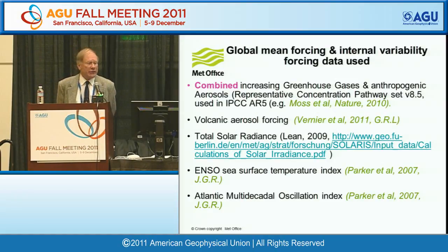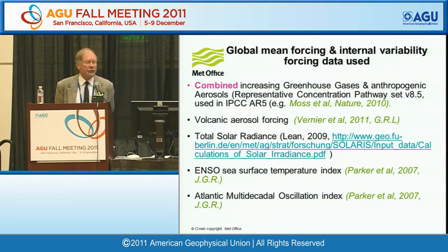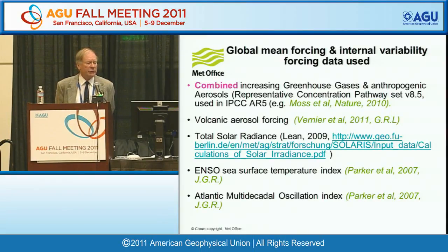What we're using here are the combined greenhouse gases and anthropogenic aerosols. Nowadays, what's used by IPCC AR5, we've chosen the RCP 8.5 data set for this particular piece of work. A new volcanic aerosol data set that's just been published — an update and improvement of the SATO data set. Lean's 2009 total solar radiation data, which has less variability in the early part of the century. An ENSO index, which is actually an EOF but could be NINO 3.4. And also an index of the Atlantic Multidecadal Oscillation.